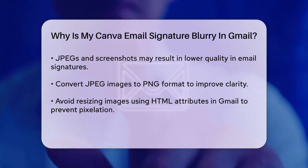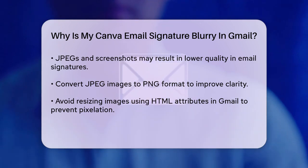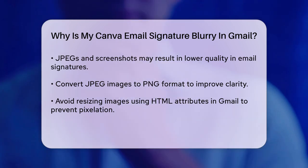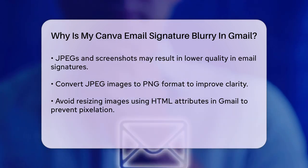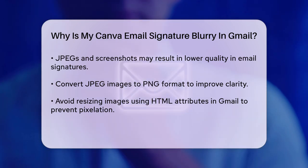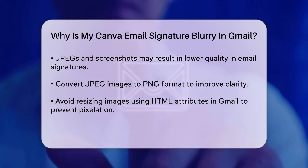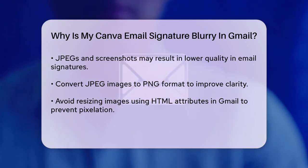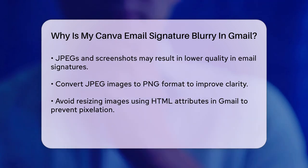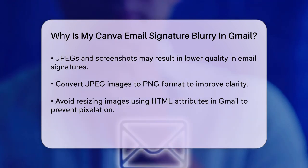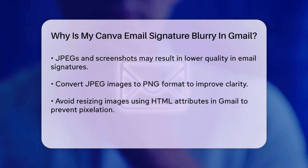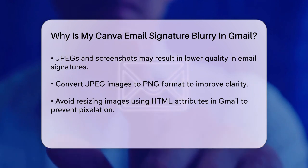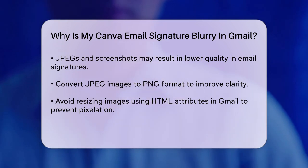When you insert your image into Gmail, make sure you're not resizing it using HTML attributes. This can cause the image to become blurry or pixelated. Instead, upload the image at the correct size from the start. If you need to adjust the size, do it within Canva before downloading the image.